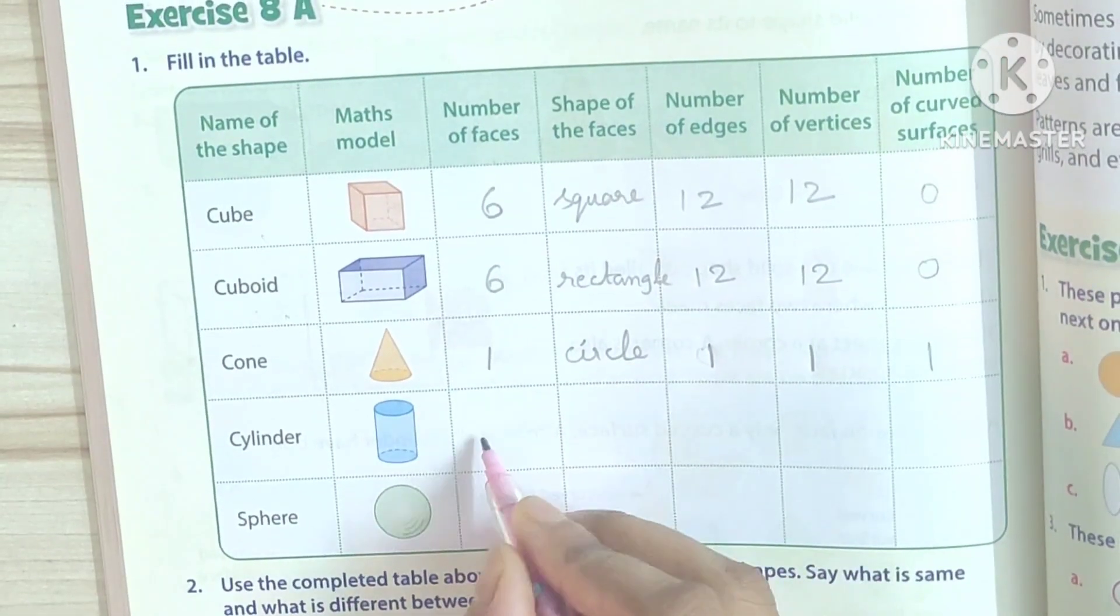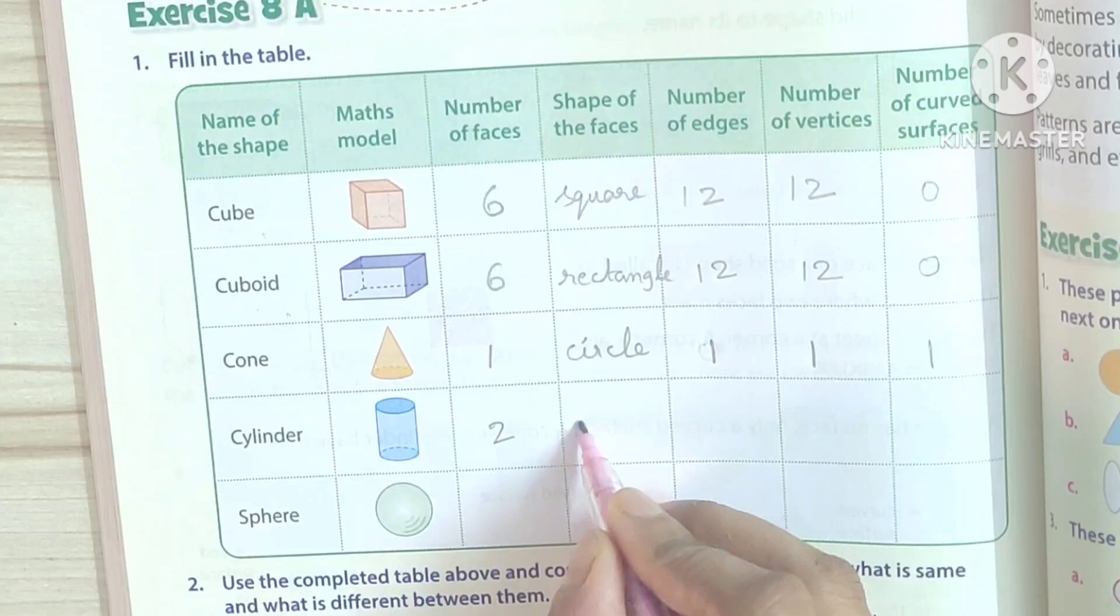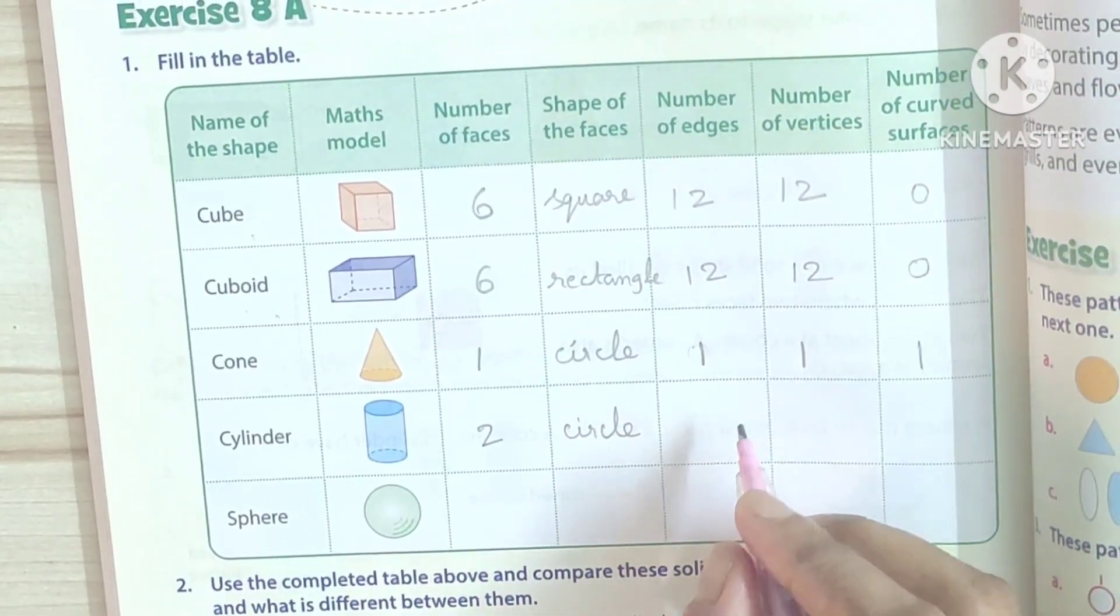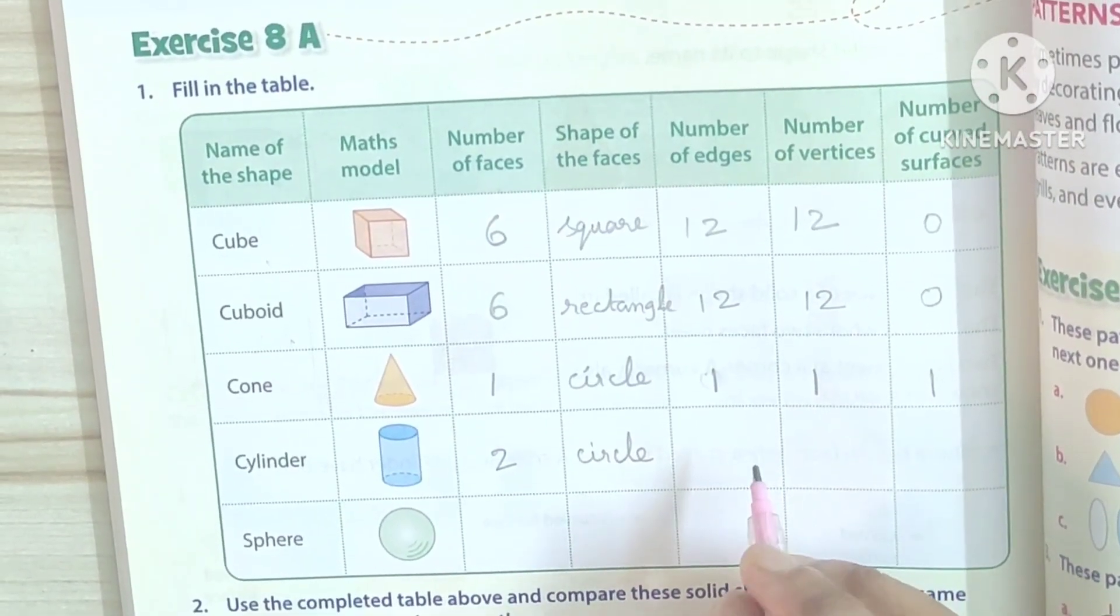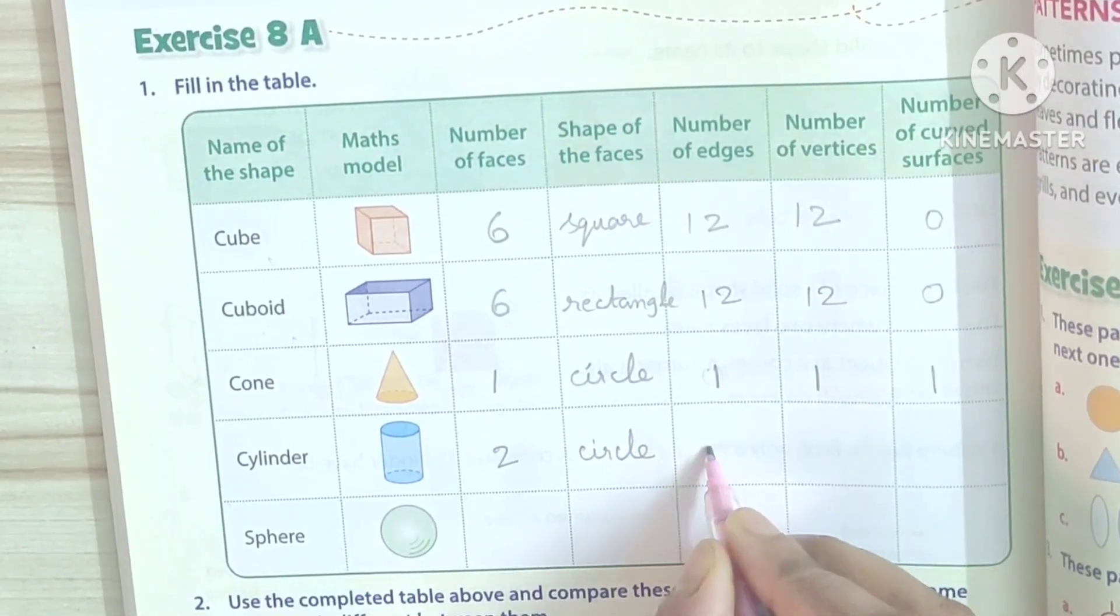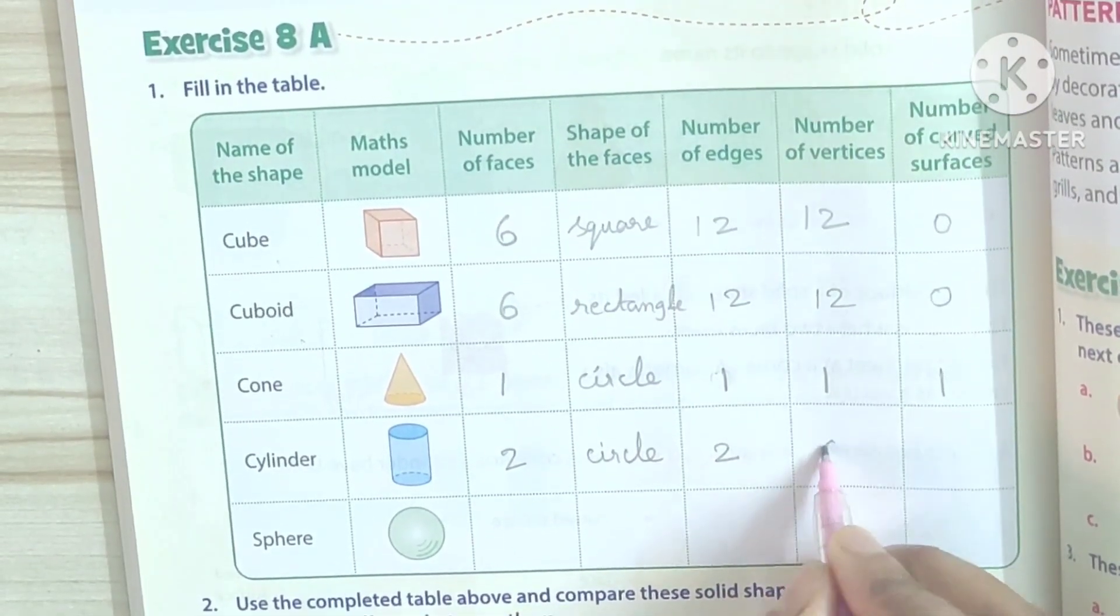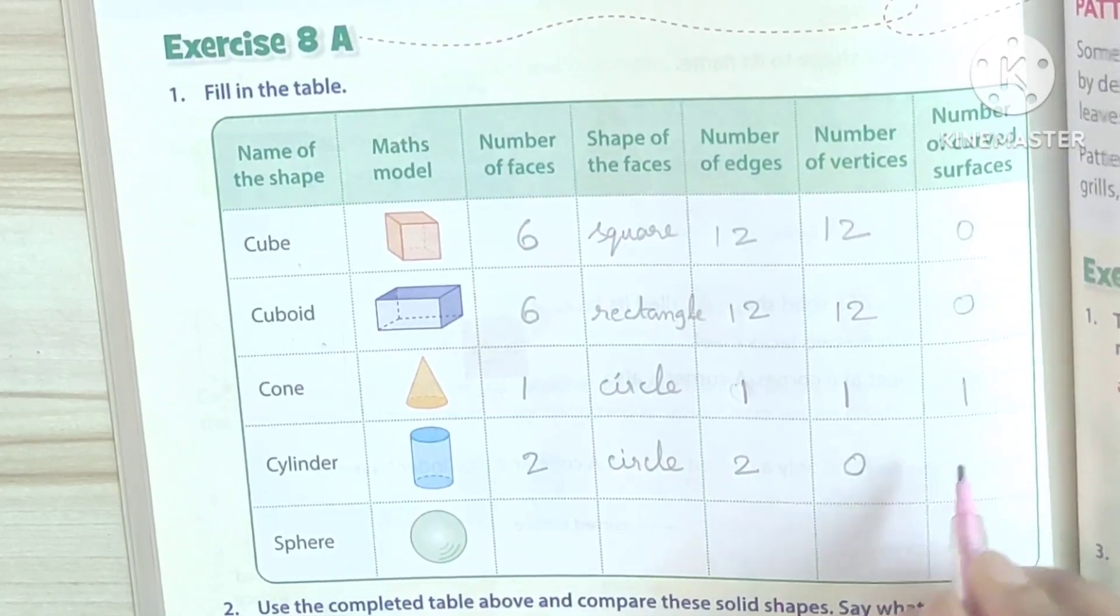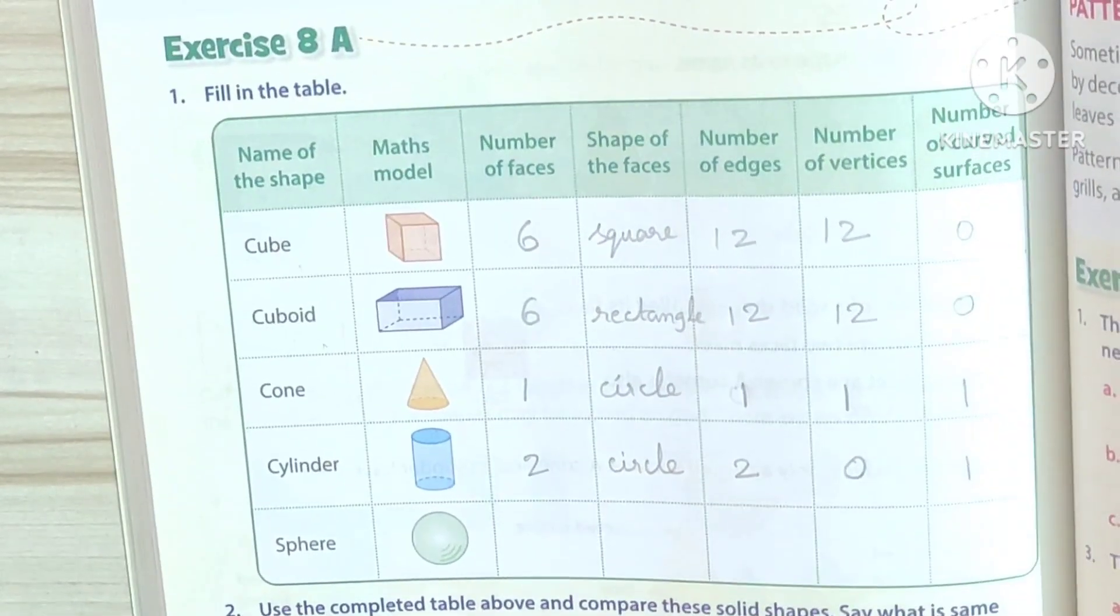Cylinder: 2 faces. Shape is circle. Number of edges: 2, 0, 0. Curved surface: 1.